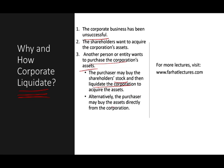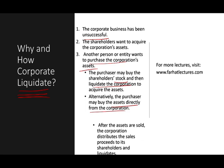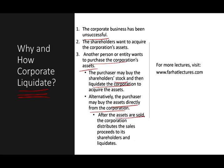Or they can buy the assets directly from the corporation. Rather than buying the stock, they can ask you to sell your building, fleet of vehicles, supplies, assets, inventory, accounts receivable — whatever you have. After the assets are sold, the corporation distributes the sales proceeds to the shareholders, and then goes out of business.